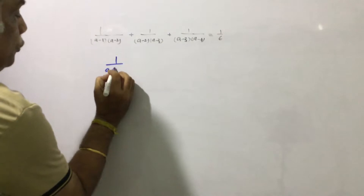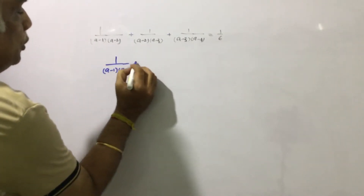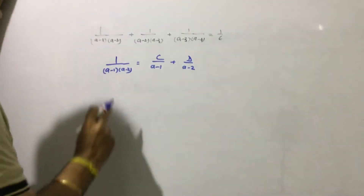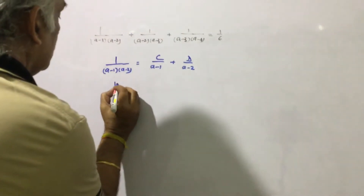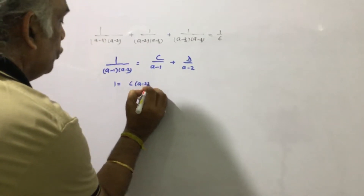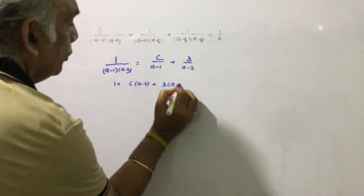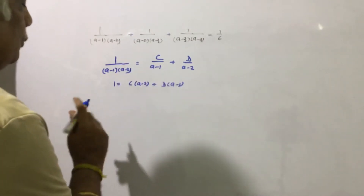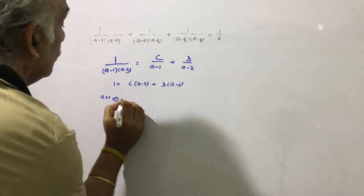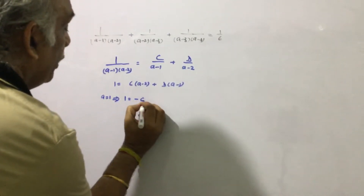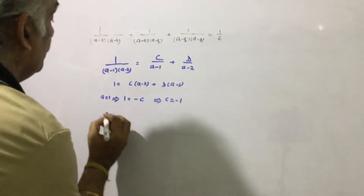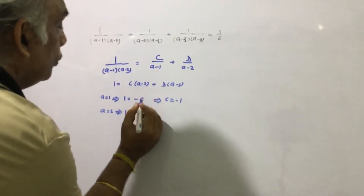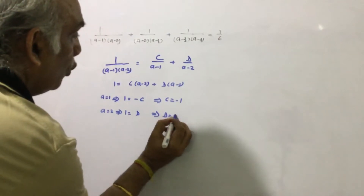1 upon (a minus 1)(a minus 2) equals c upon (a minus 1) plus d upon (a minus 2). We can write it as: c(a minus 2) plus d(a minus 1). Putting a equal to 1, we get 1 equal to minus c, so c equal to minus 1. And putting a equal to 2, we get 1 equal to d, so d equal to 1.